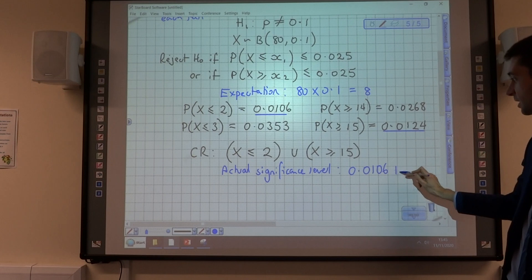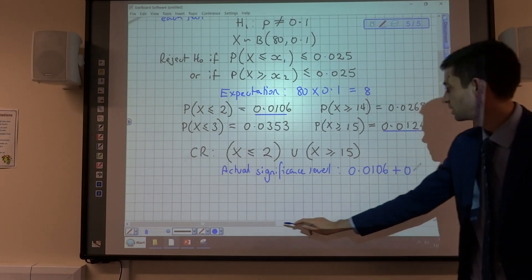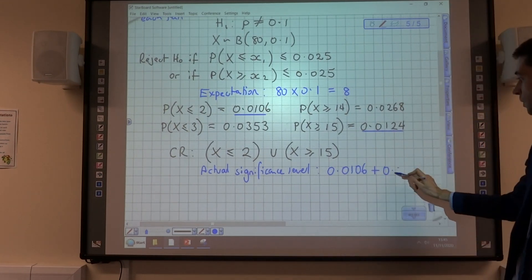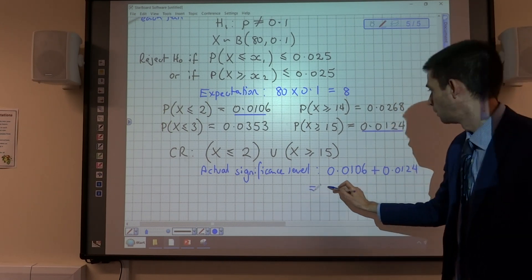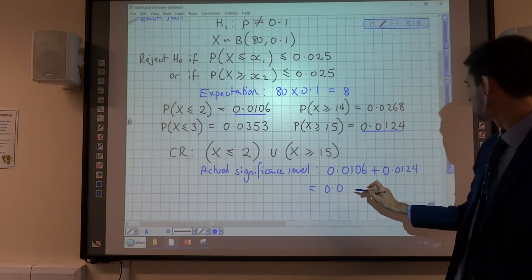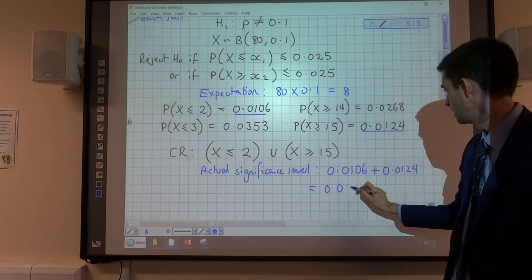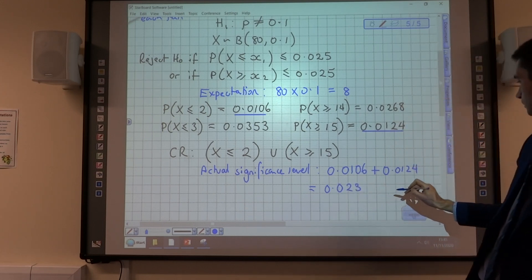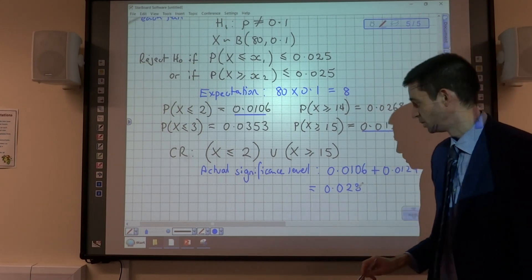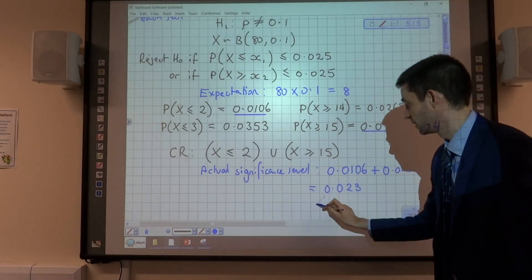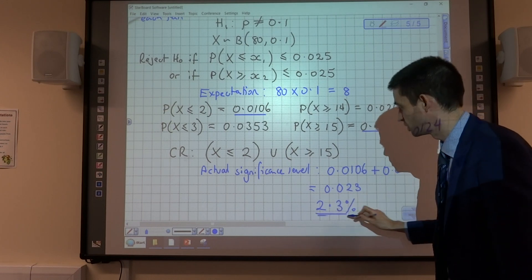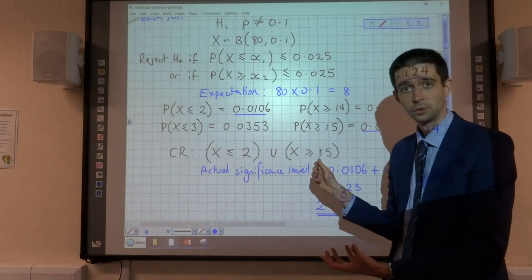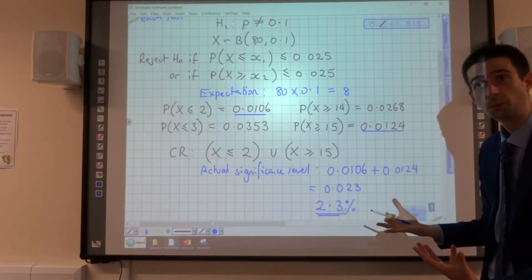We know the probability of rejection at the lower end is 0.0106. And we know the probability at the higher end is 0.0124. So if we add those together, we're going to get 0.023. So the actual significance level of our test is 2.3%, because that just happens to be where these values fall. So that's one thing that we could be asked to do.